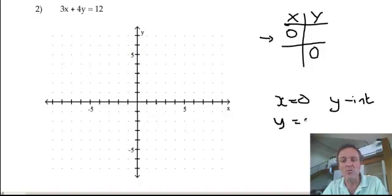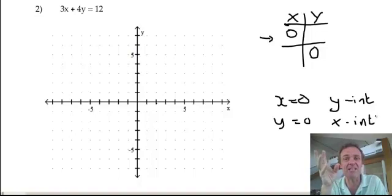When y equals 0, you're going to have an x-intercept. Dog's in the background. So when y equals 0, it's going to cross the x-axis. When x equals 0, it's going to cross the y-axis.